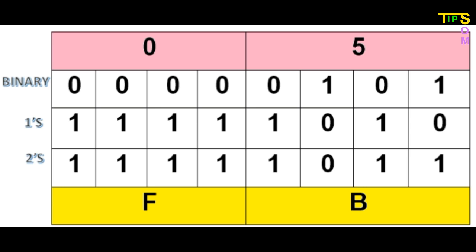Next, INR adds one to the one's complement to find the two's complement. Adding one to the rightmost bit of 1111 1010: the last zero becomes one, giving 1111 1011. Converting back to hexadecimal: 1111 is F and 1011 is B, so the result should be FB. Let's go to the emulator to confirm.